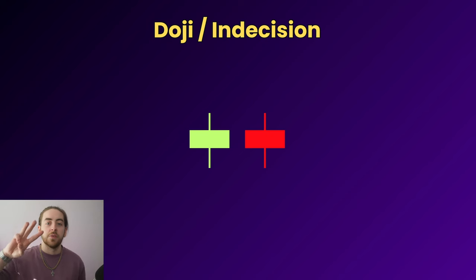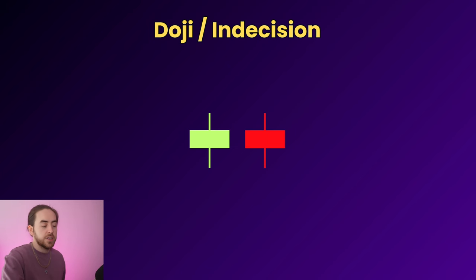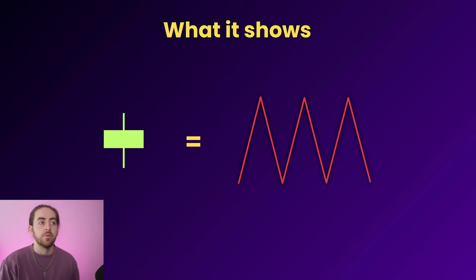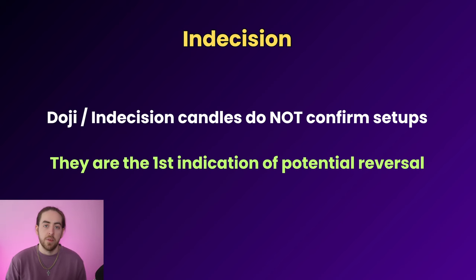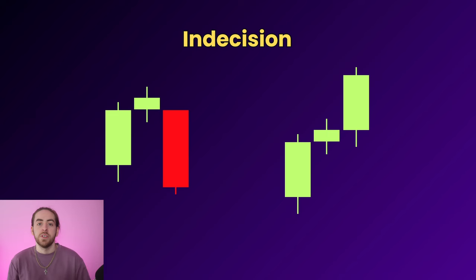Moving on to candlestick pattern number three — the doji, or indecision candle. Rather than showing an indication or confirmation of reversal like the pin bar and engulfing do, doji and indecision candles show us a phase of consolidation — when we see a doji the market is essentially going sideways and failing to make any meaningful moves. From doji or indecision candles we have two potential outcomes: reversals and continuations.